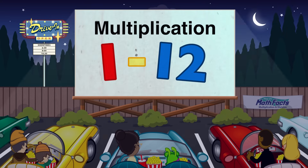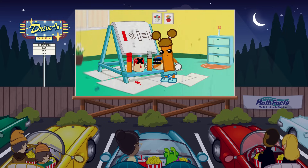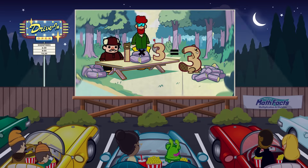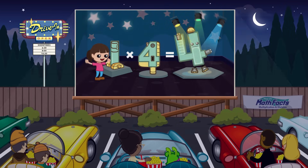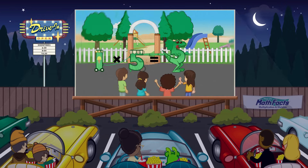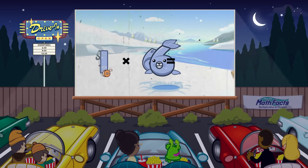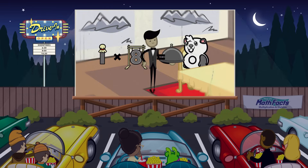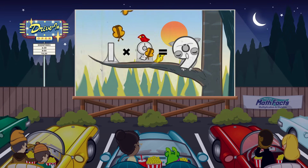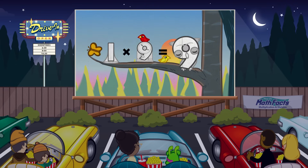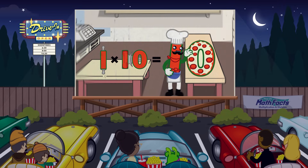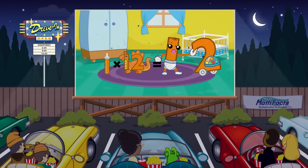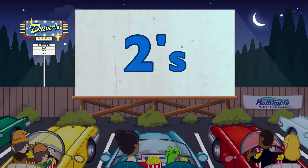1 times 1 equals 1. 1 times 2 equals 2. 1 times 3 equals 3. 1 times 4 equals 4. 1 times 5 equals 5. 1 times 6 equals 6. 1 times 7 equals 7. 1 times 8 equals 8. 1 times 9 equals 9. 1 times 10 equals 10. 1 times 11 equals 11. 1 times 12 equals 12. Now let's try twos!